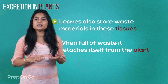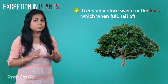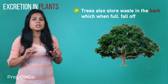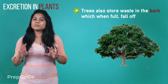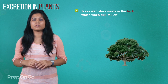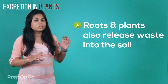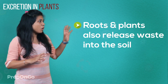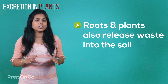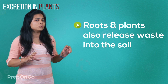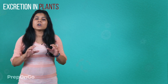In a similar way, the tree stores its waste material into the barks, which when full, falls off. Sometimes, the roots also release waste material through the roots into the soil.